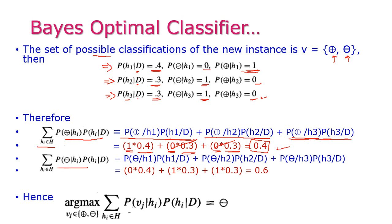Just like the same, we compute for the negative value. Since h1 is classified as positive only, P(negative | h1) = 0, so that term is removed. This leaves 0.3 + 0.3 = 0.6 for the negative probability. Hence the argmax — the maximum argument — over vj in {positive, negative} of the summation of P(vj | hi) × P(hi | D) equals negative.